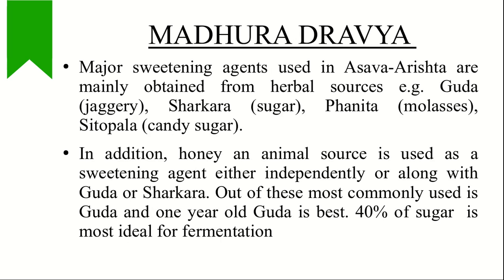Madhura Dravya: major sweetening agents used are mainly from herbal sources — Guda, Sharkara, Phanita, Sitopala, etc. Honey from animal source is also used, either independently or along with Guda or Sharkara. The most commonly used is Guda, and one-year-old Guda is considered best. If the solution contains 40% sugar, it is ideal for fermentation — it enhances microbial action and fermentation is initiated and completed easily.